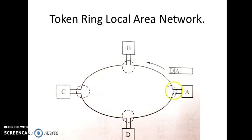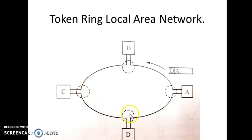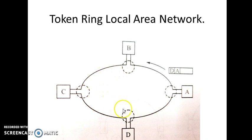They are connected as point-to-point networks, meaning A is directly connected to B and D, B is directly connected to A and C, C is connected to D, and D is connected to A. The transfer of data in the ring is unidirectional — it happens only in one direction.